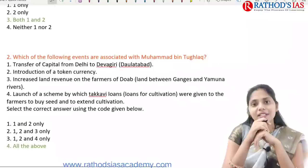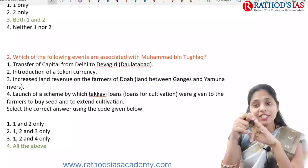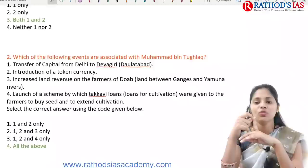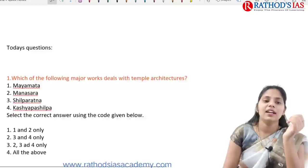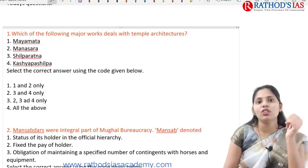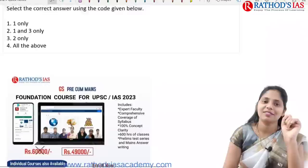The next question is regarding Muhammad bin Tughluq. He transferred the capital from Delhi to Devgir (Daulatabad). He introduced token currency. He increased land revenue on farmers of the Doab (Ganga-Yamuna region). He launched a scheme by which Taqavi loans — loans for cultivation — were given to farmers to buy seeds and extend cultivation. All four statements are correct, so the answer is 'all of the above'. Today's questions for you are about temple architecture and Mansabdari system — give correct options in the comments.